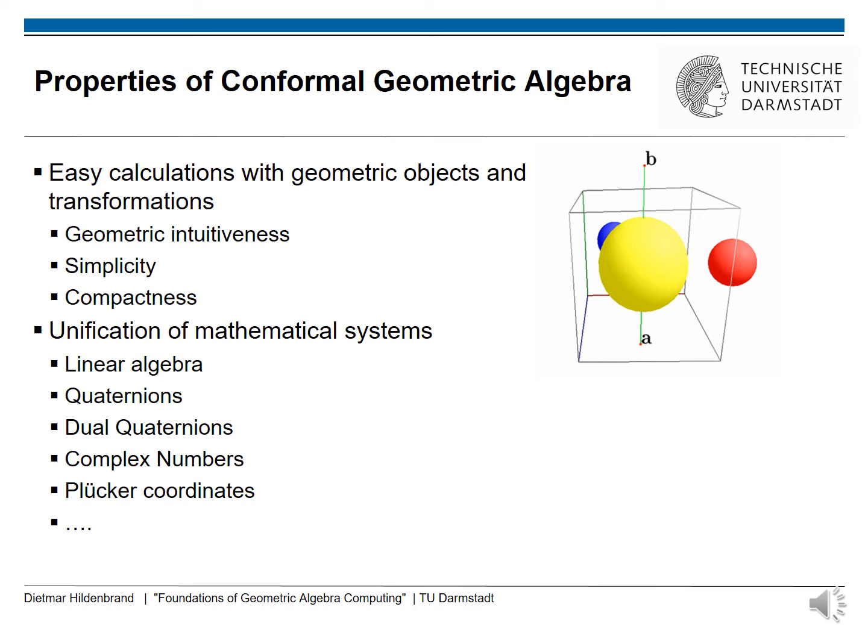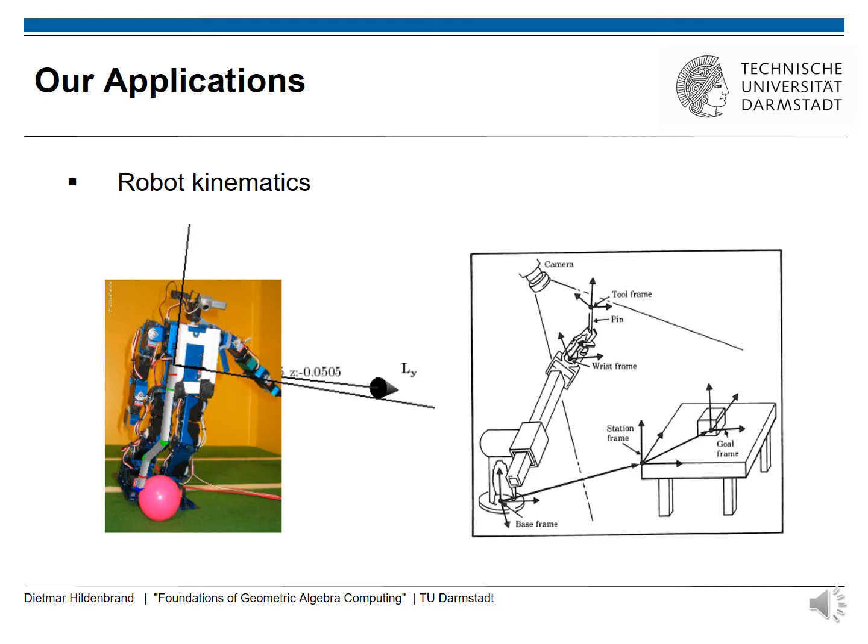These examples show that it is very easy to calculate with geometric objects and transformations in conformal geometric algebra. Some properties are geometric intuitiveness, simplicity, and compactness of the expressions. Another very important property is that conformal geometric algebra unifies many mathematical systems — for instance, linear algebra, quaternions, dual quaternions, and also Plücker coordinates, which are used for the handling of arbitrary lines.